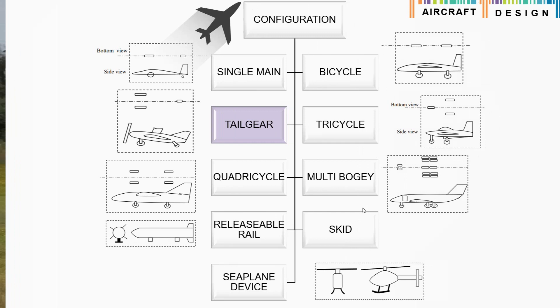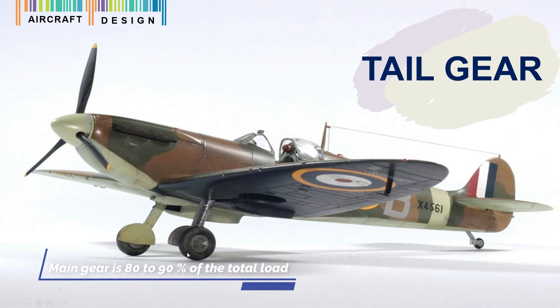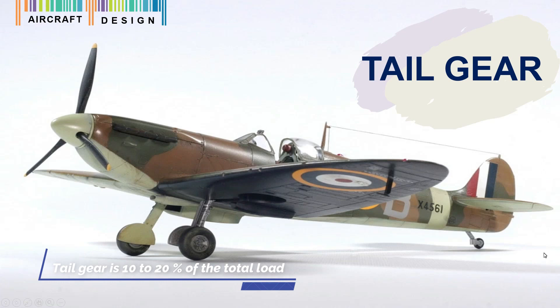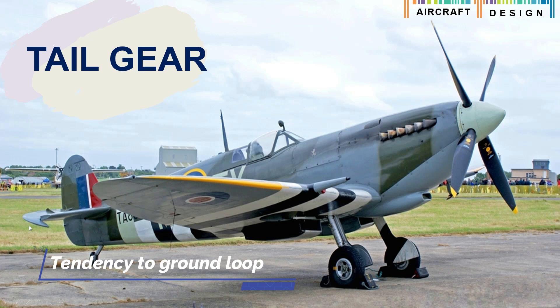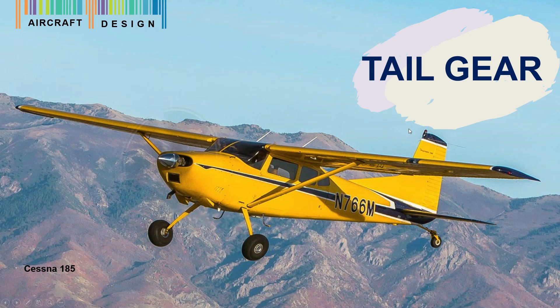The tail gear configuration, also known as a tail dragger, has two main wheels forward of the aircraft's center of gravity and one small wheel under the tail — as seen in the Spitfire, for example. The main landing gear carries about 80 to 90 percent of the total load, while the tail gear carries about 10 to 20 percent. One of the most risky aspects of this configuration is the tendency to ground loop, and it has poor visibility due to a high deck angle. It has been used in many aircraft like the Tiger Moth and the Cessna 185.